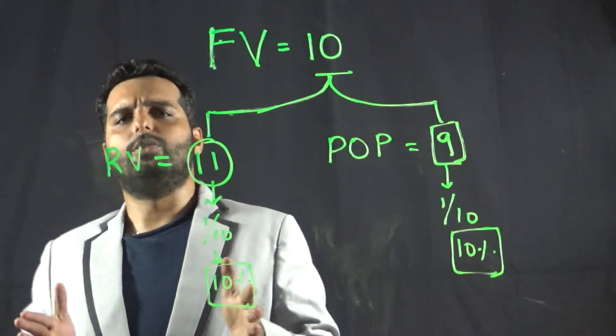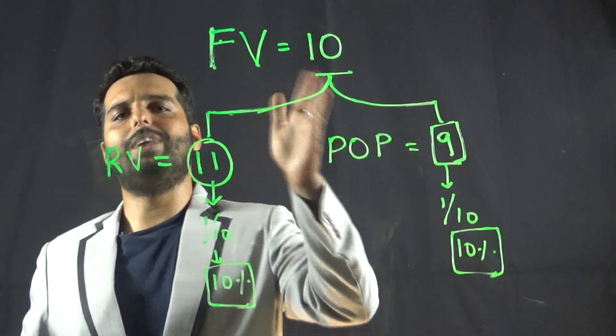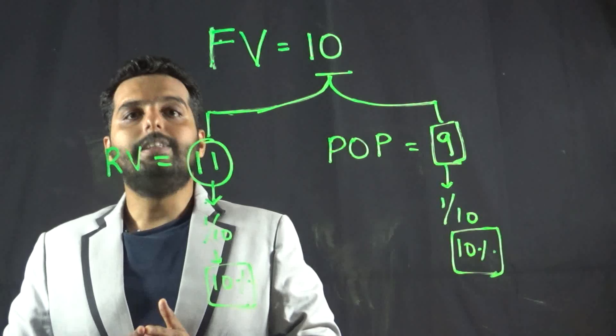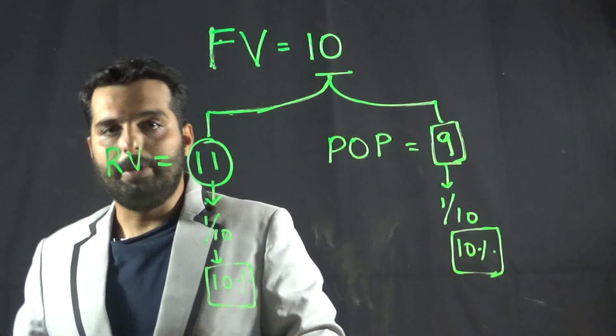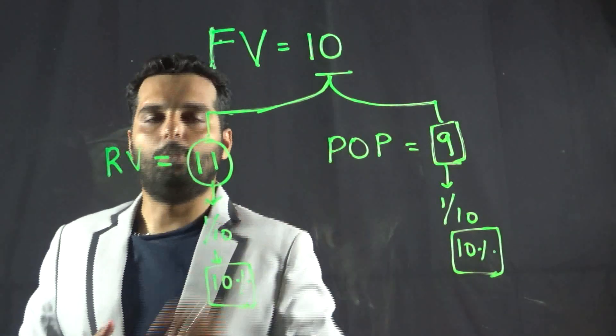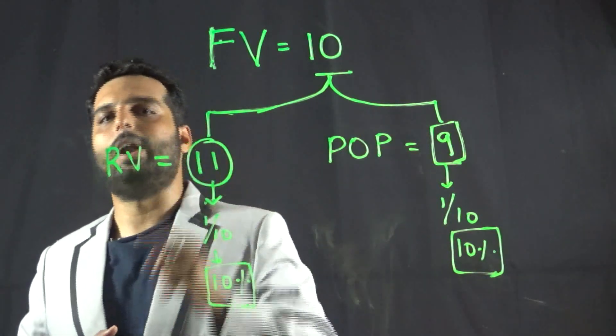Let us assume there is a mutual fund which has a face value of 10 rupees per unit. This company has gone for a POP. POP means public offer price at 9 rupees, that is at a discount of 1 rupee.